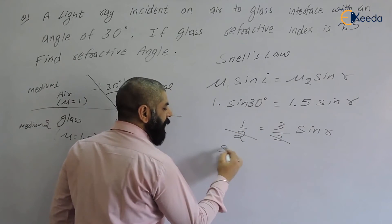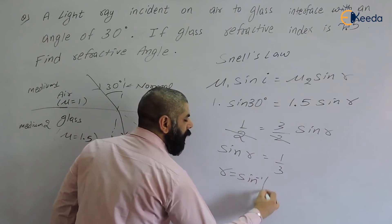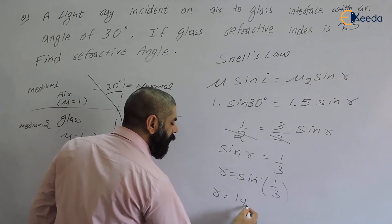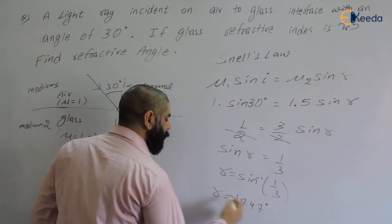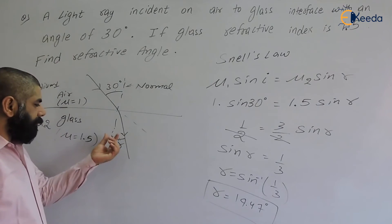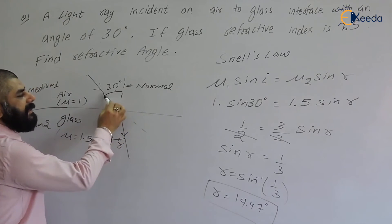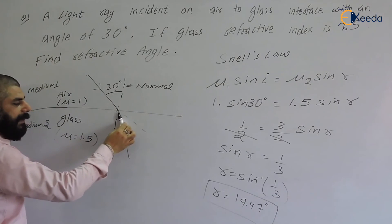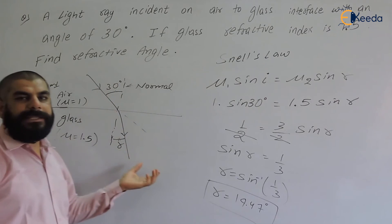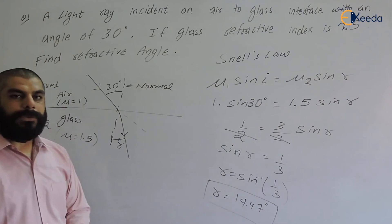After cancellation, sin(r) = 1/3. Therefore the angle of refraction r = sin⁻¹(1/3), which comes out to be 19.47 degrees. So if the angle of incidence is 30 degrees, the angle of refraction is 19.47 degrees, which is less than 30 degrees — confirming that the ray bends towards the normal when light passes from a rarer to a denser medium. Thank you so much.